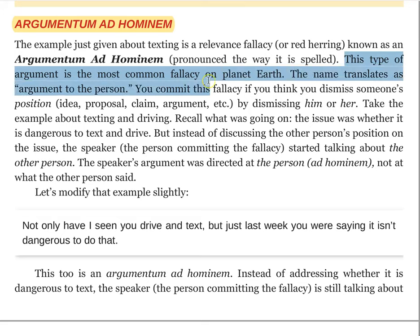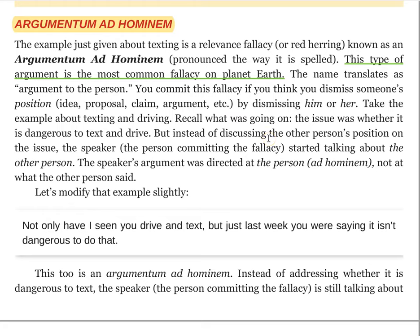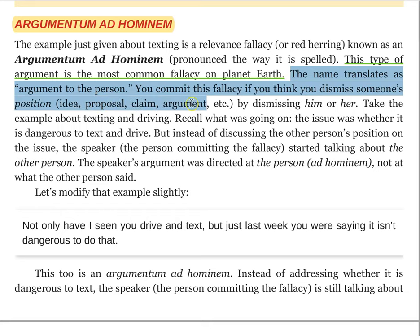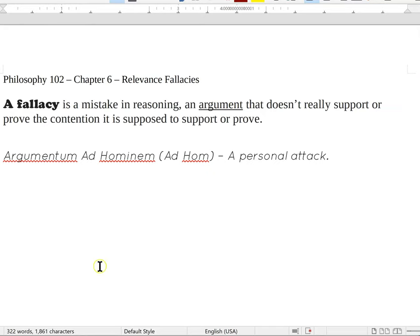This type of argument is the most common fallacy on planet Earth, they say — though I'm not sure how they arrived at that conclusion. As always, I encourage you to be skeptical of your textbook's claims when they're this far-flung. The name translates as argument to the person. You commit this fallacy if you think dismissing someone's proposition — the idea, the proposal, the claim, the argument — by dismissing him or her. It's not just any critique of a person; it's an irrelevant critique of a person.